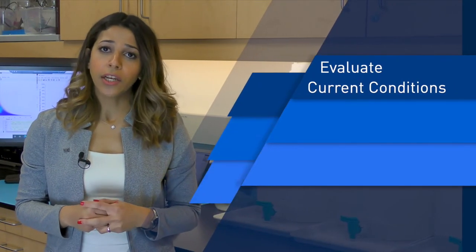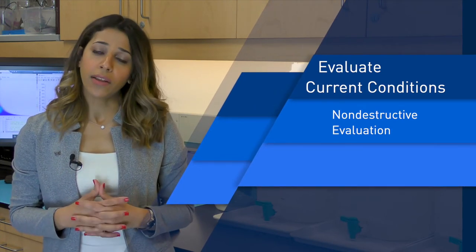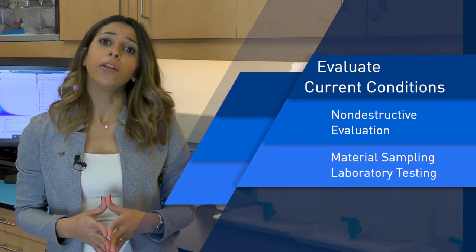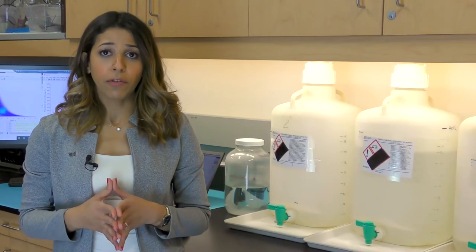For existing structures, our approach is based on the idea that the best prediction of an existing structure's future performance is through careful evaluation of its past performance and its actual current condition. We do that through field investigation utilizing the latest technologies of non-destructive evaluation and also through laboratory testing of material samples collected from the structure. The inputs for our service life model are derived from condition assessment findings measured directly from the structure of interest. To consider the inherent variability in concrete construction and exposure conditions, we use probabilistic analysis.